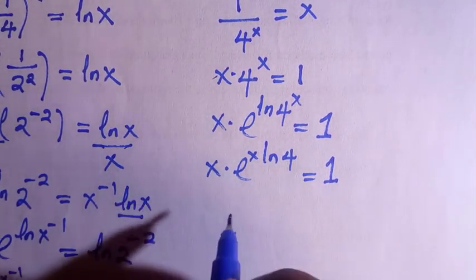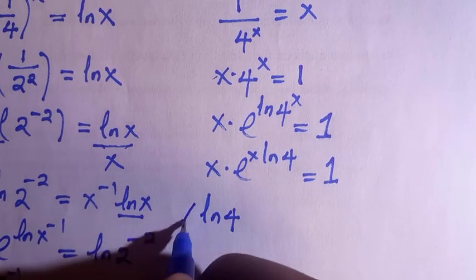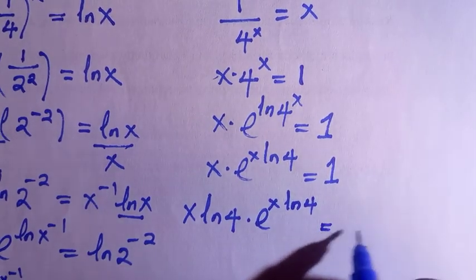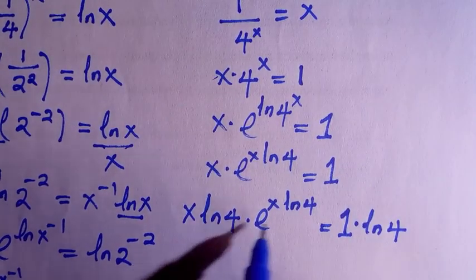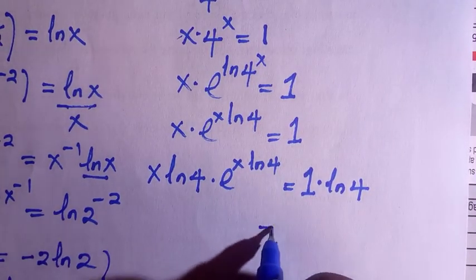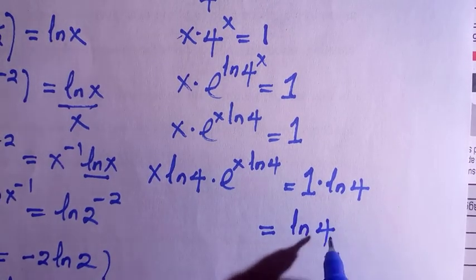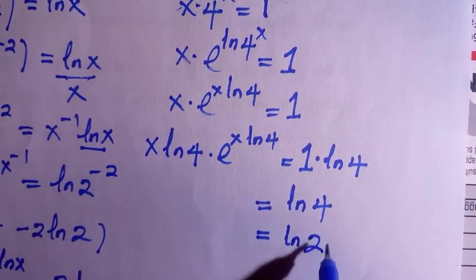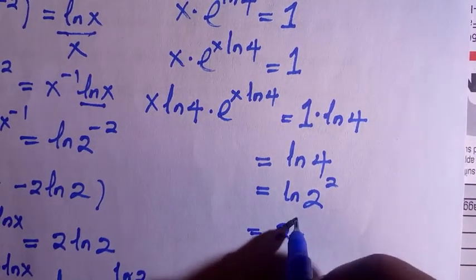I want x to look the same as the power of the exponential. So introducing x·ln 4 to both sides, we have x·ln 4 times exponential of x·ln 4 equals 1. Multiplying by ln 4 on both sides, the right-hand side becomes 1 times ln 4, which is ln 4. And ln 4 can also be written as ln of 2², so bringing 2 down gives 2 ln 2.